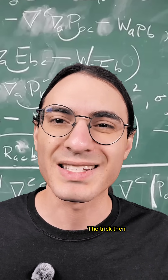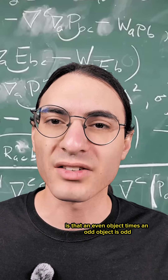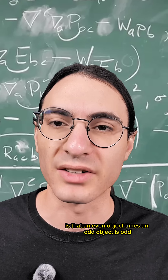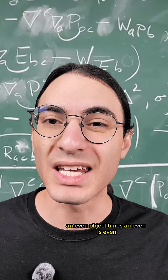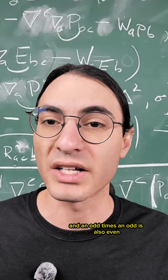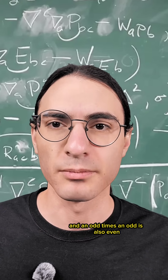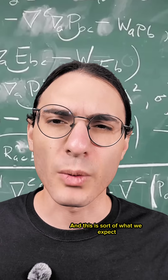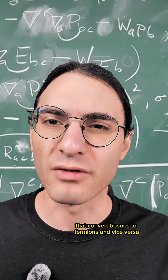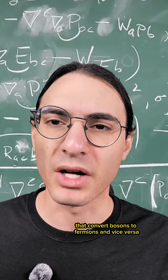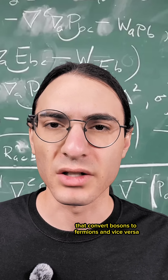The trick then is that an even object times an odd object is odd, an even object times an even is even, and an odd times an odd is also even. And this is sort of what we expect the quantum operators to do that convert bosons to fermions and vice versa.